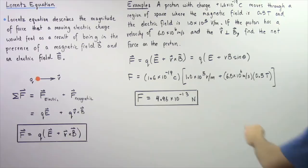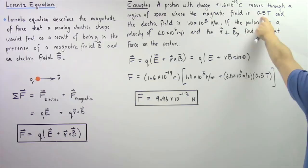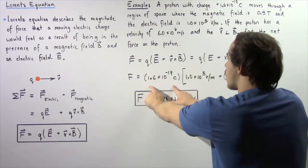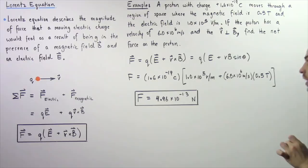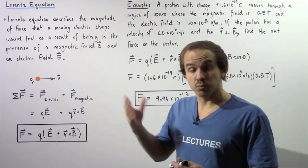Q is equal to 1.6 times 10 to the negative 19 coulombs, E is equal to 1.0 times 10 to the 5 volts per meter, V is equal to 6 times 10 to the 6 meters per second, and B is equal to 0.5 teslas. We take the sum and multiply by the charge on our proton, and we find the force is about 4.96 times 10 to the negative 13 newtons. This is the net force acting on our positively charged proton as a result of the electric force as well as the magnetic force.